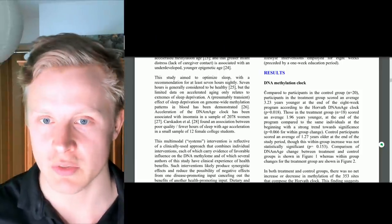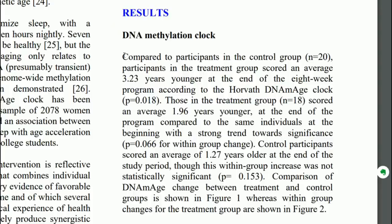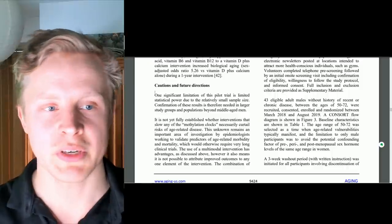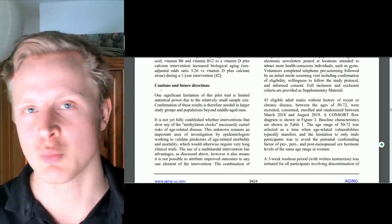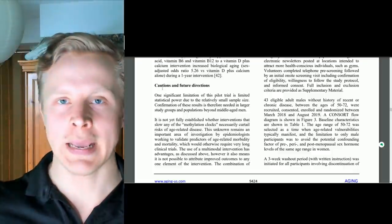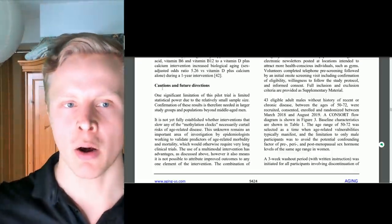So now let's look at the results of the study. Compared to participants in the control group, participants in the treatment group scored an average 3.23 years younger at the end of the 8-week program, according to the Horvath DNA methylation age clock. The authors also point out that it's a small study, there's only 40 people and it was only 8 weeks.